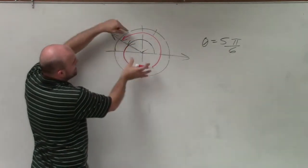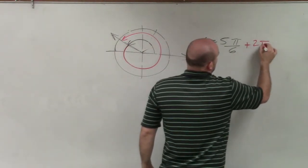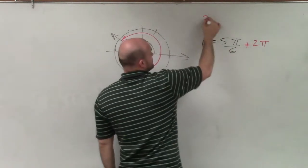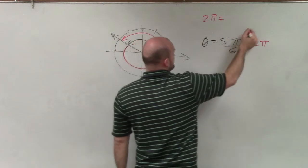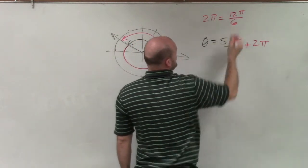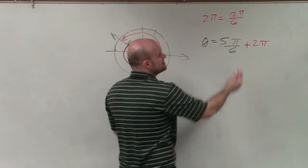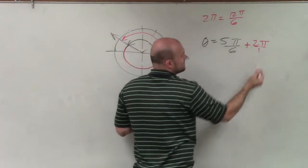So how do I represent adding this whole revolution? Well, I simply can just add 2π. Now, in this case, 2π is equivalent to 12π over 6. And the reason why, you know, 12 divided by 6 is 2. The reason why I want to rewrite that is because these denominators have to be the same.